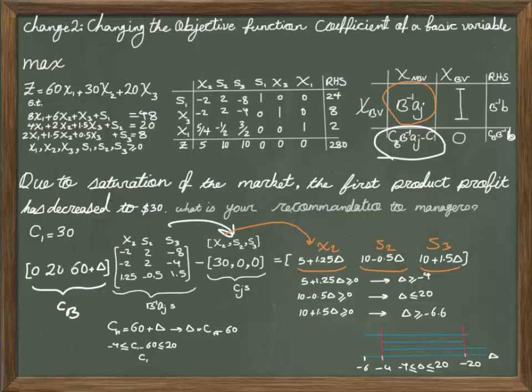Now, if I replace delta in my range, I can find a range for the coefficient instead of the range for the delta. So you see that if your coefficient is between 56 to 80, you're remaining in the same optimal solution.